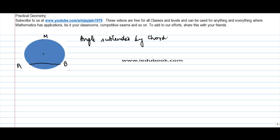Now if you join AM and MB, there is an angle which is formed by the chord here: angle AMB. So this angle formed by the chord on any other point in the circle is called the angle subtended by the chord.